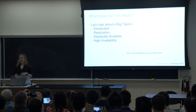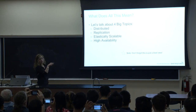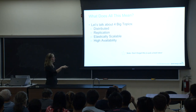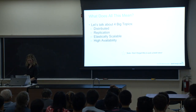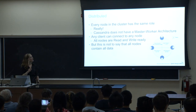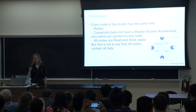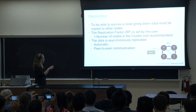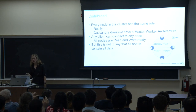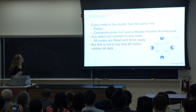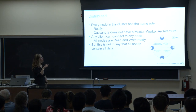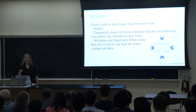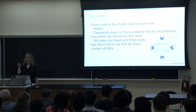Let's talk about the four big topics: distributed, replication, elastically scalable, and high availability. Every node in a Cassandra cluster has the same role — really. Cassandra does not have a master-worker architecture. You can connect to any node for all your reads and writes because they are all the same. There's no gateway node. Each node is the same. But this is not to say that all the nodes contain all the data.